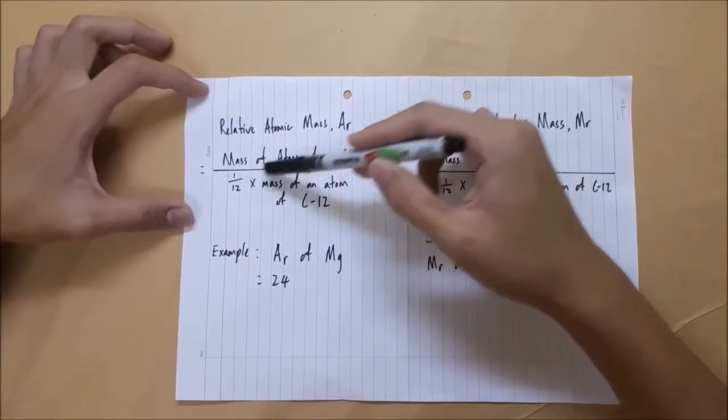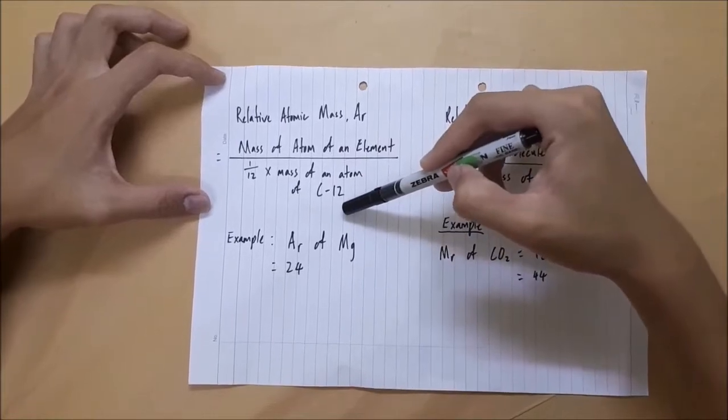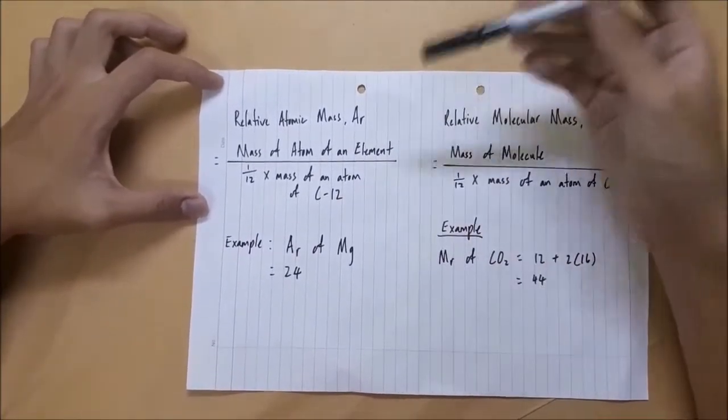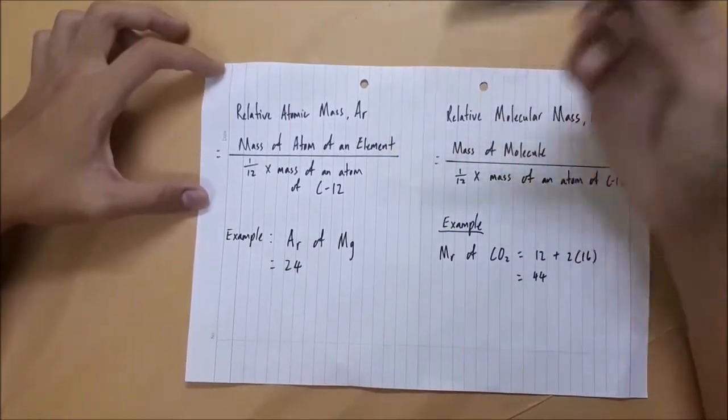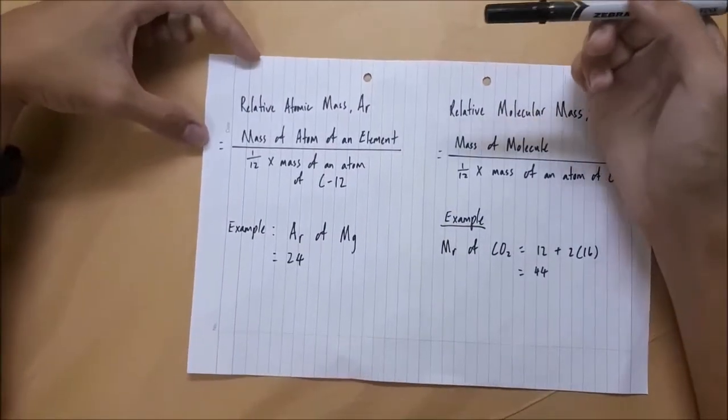Relative Atomic Mass is defined as the ratio of the mass of an atom of an element to one-twelfth of the mass of an atom of carbon-12. Relative Atomic Mass can be said to be equal to the Nucleon number of an element. For example, by referring to the periodic table of elements, we know that the AR of magnesium is 24 because the Nucleon number of magnesium is 24.